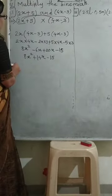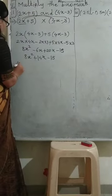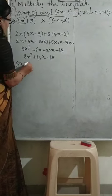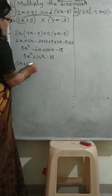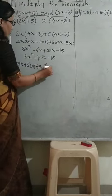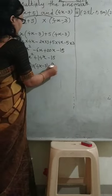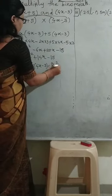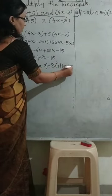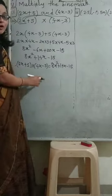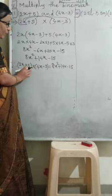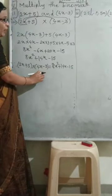Now combining like terms: 8x squared stays as it is. For the x terms: plus 20x minus 6x — the bigger number sign is plus, so 20 minus 6 gives 14x. And minus 15 stays as it is. Therefore the answer is: (2x + 5)(4x − 3) = 8x² + 14x − 15.